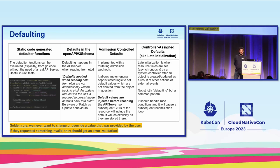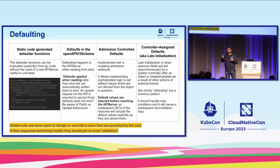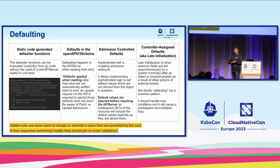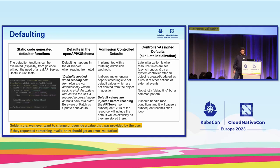In Kubernetes we also have a third way to get defaults: an admission controller, where you can put sophisticated logic. The admission controller changes the value before it reaches the API server, so the value is always written to the API server. With OpenAPI v3 schema defaulting, the mechanism happens when you read back the value — if you store nil, the API server applies the default on read. There's also late initialization, where your controller changes spec values, but be careful as it can introduce loops.